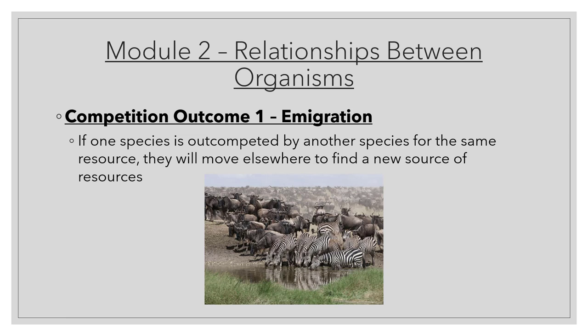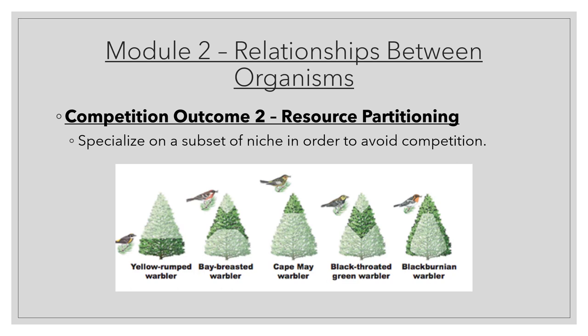Outcome number one is emigration. If you are being out-competed by an organism that's better at getting a certain resource than you are, just go somewhere else — it will ensure your survival. You move and hopefully find a place where you're no longer in competition. The second outcome is called resource partitioning — the notion that in order to avoid conflict, every organism fighting over a resource will draw back and only use a part of it.